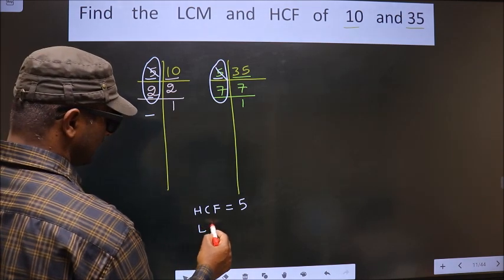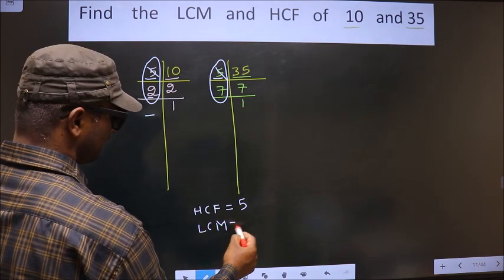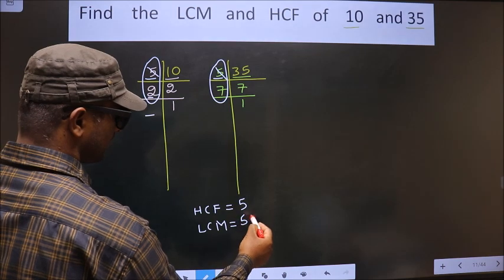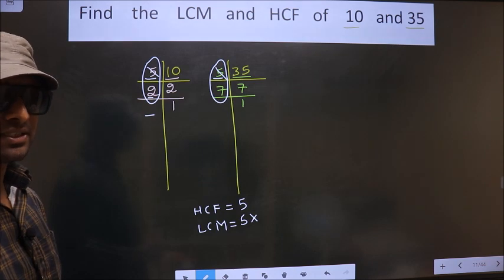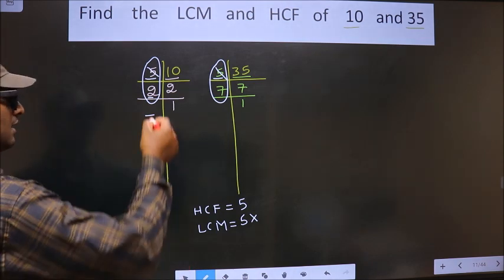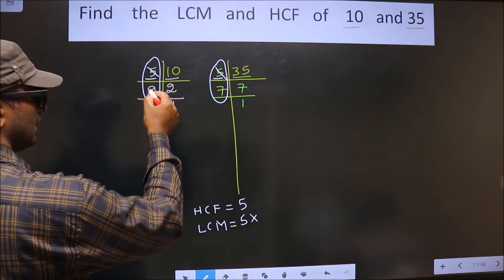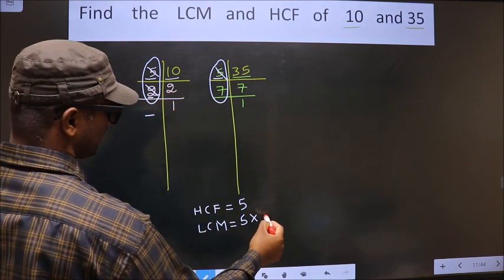Now to get LCM, to the HCF we should multiply by certain numbers. How do we decide those numbers? Here 2 is not cut, so you cut 2 right here.